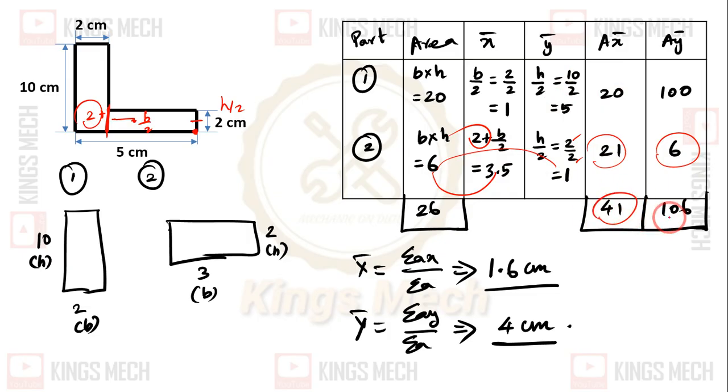Now summation of Ax and summation of Ay. Capital x̄ is summation Ax divided by summation A. Summation Ax is 101 divided by 26, which is nearly 1.6, we can round it as 2. Summation Ay divided by summation A gives us 4 point something, we will take it as 4. Now we are going to solve the moment of inertia.